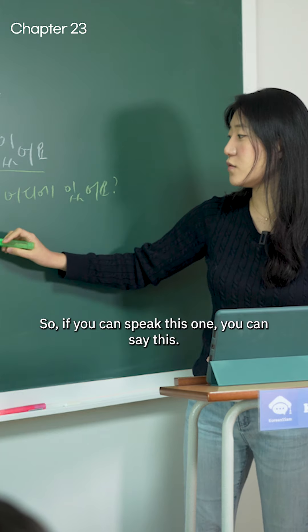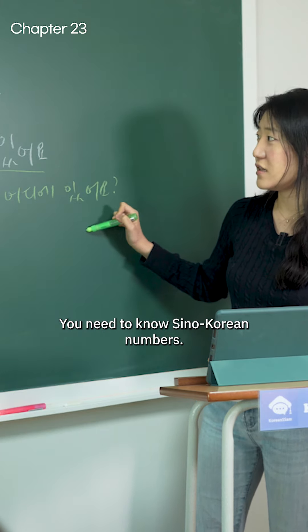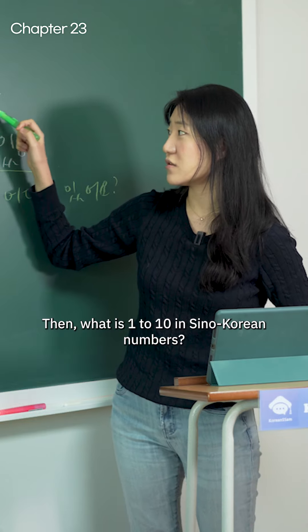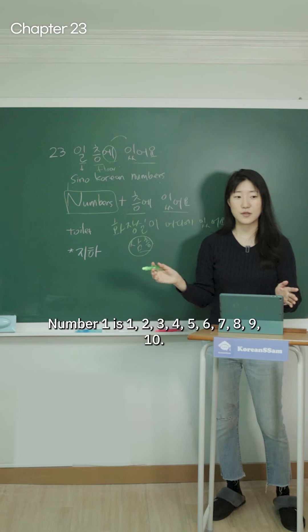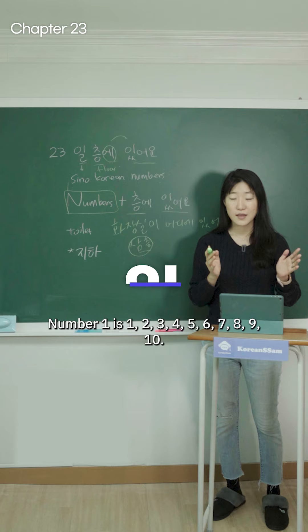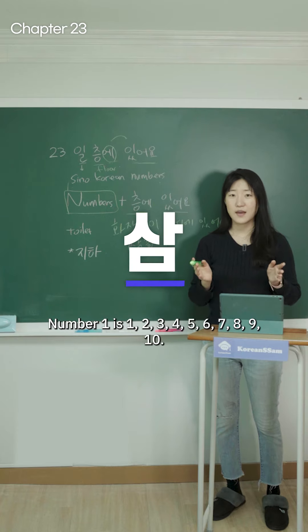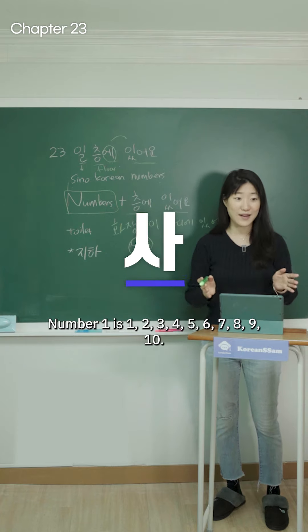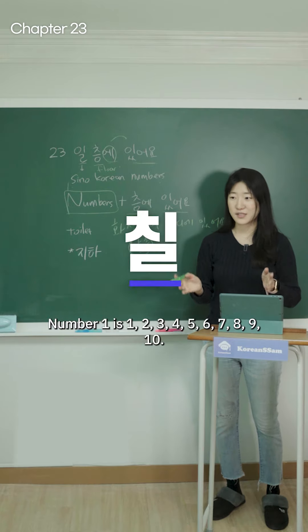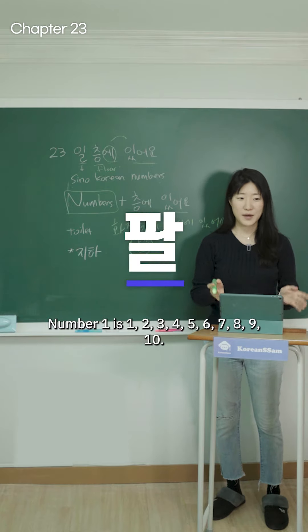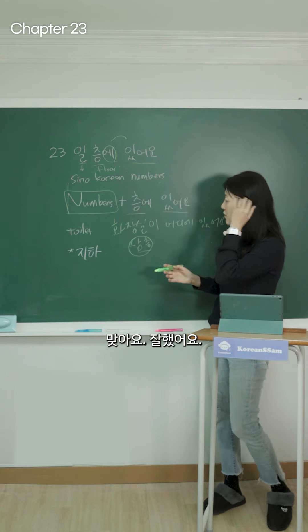So if you can speak this one, you can say this — you need to know Sino-Korean numbers. Then what is 1 to 10 in Sino-Korean numbers? 1, 2, 3, 4, 5, 6, 7, 8, 9, 10. 맞아요, 잘했어요!